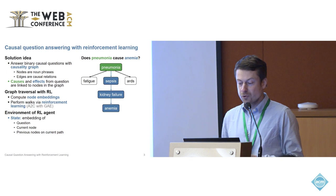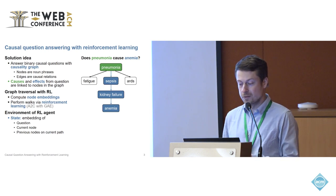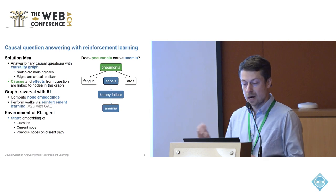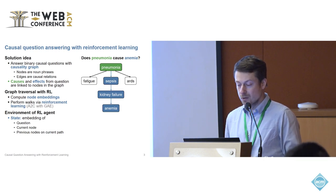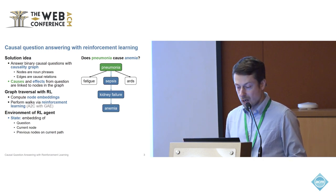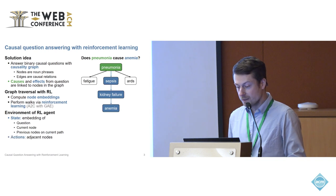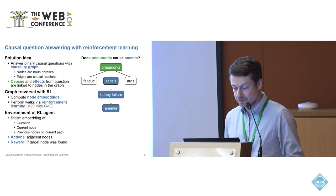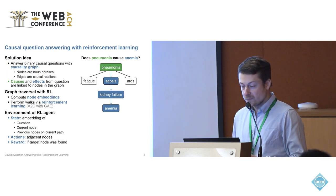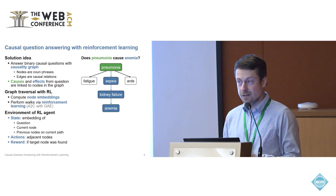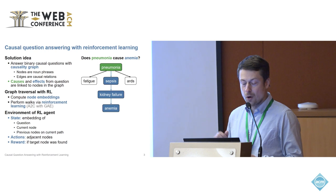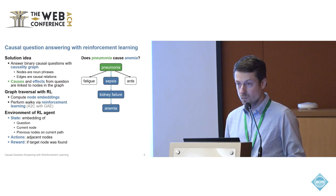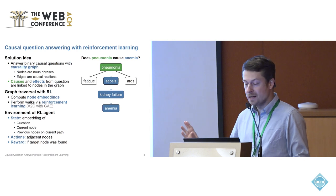For the agent, we represent a state as follows: the agent receives the current question as part of the state, the current node, and also the previously visited nodes on the current path. The action is to decide what node to go to next. Most of the time, the agent does not receive any reward. Only at the very end, once the target node is found, it receives a reward of one. This is done for training our agent.